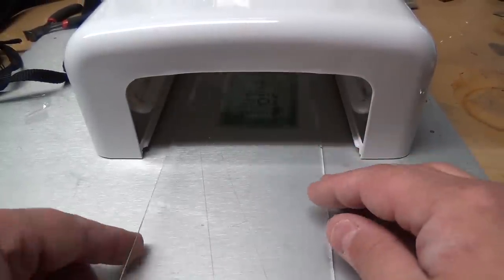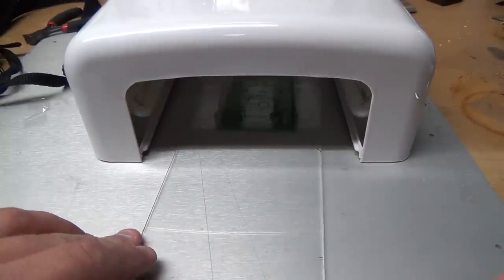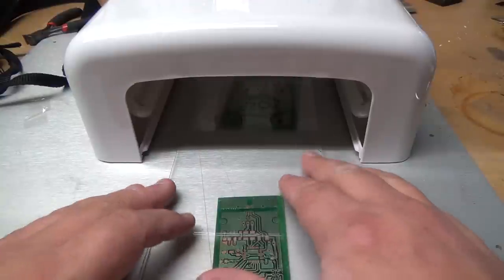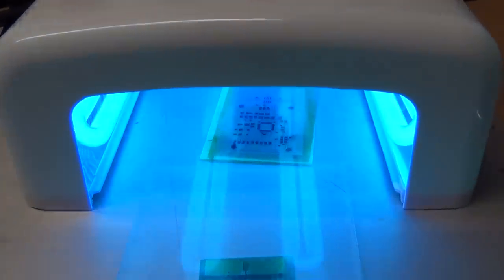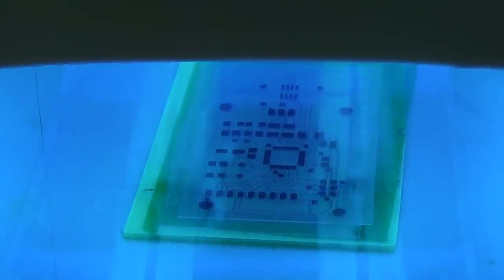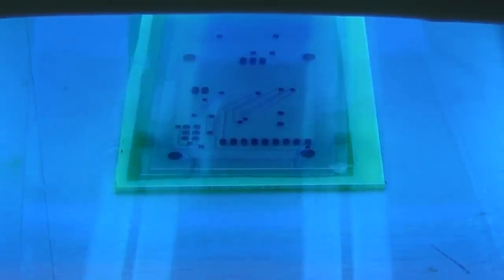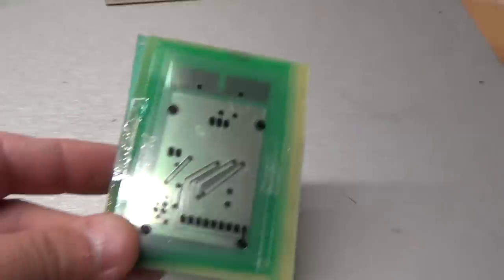This should be done right now for this side, then I'll flip this over and expose the other side for two minutes. Then we have to let this rest for five minutes. I'm flipping this over now and going to let it run for two minutes on this side. I'm going to prepare the developer, which is sodium carbonate and water, or washing soda. You can pick it up from the store fortunately, so there's no special chemicals you need.